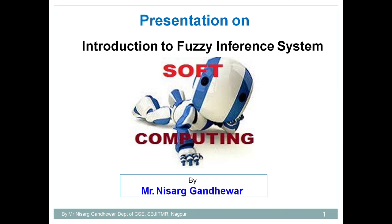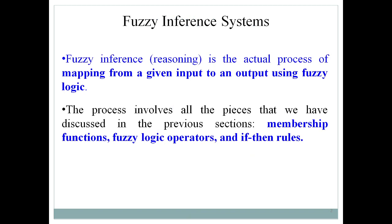Fuzzy inference system is a system — or you can say a process — of mapping input to output with the help of fuzzy logic. You are converting fuzzy input to output by application of fuzzy logic, and for that purpose you require a fuzzy inference system. This system makes use of three components: first is a membership function, second is a fuzzy logic operator, and third is if-then rules. These three components play a very important role in the formation of a fuzzy inference system.